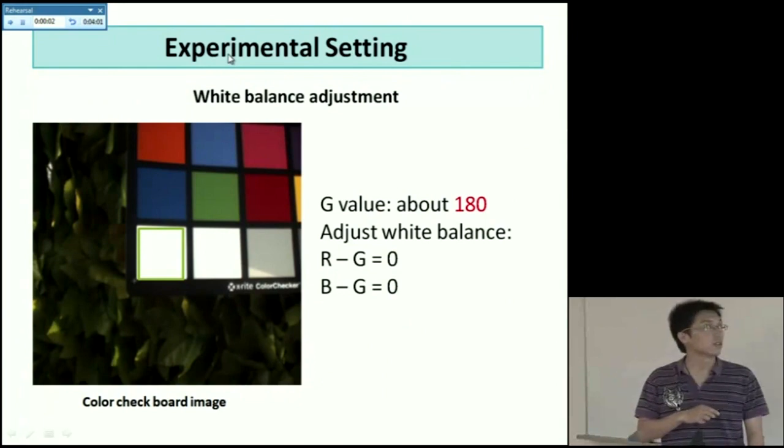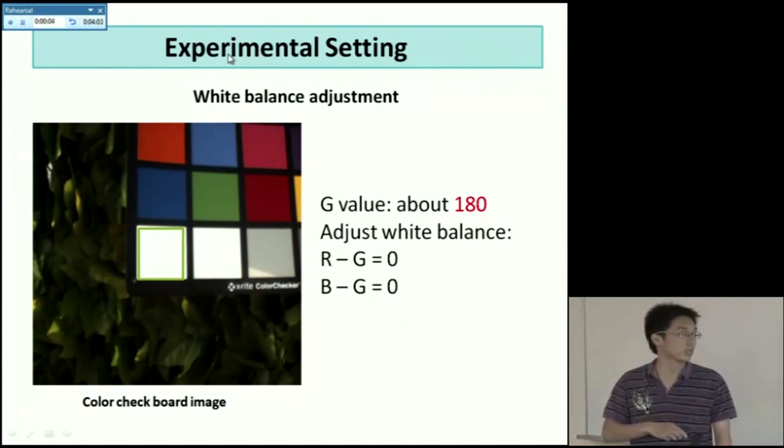By setting like this, this is a white balance adjustment. Take an image of the color checker. And in the area of the white part, the G value is about 180. And then we adjust the white balance to achieve this.